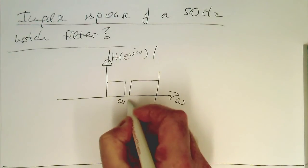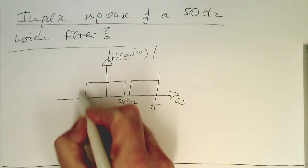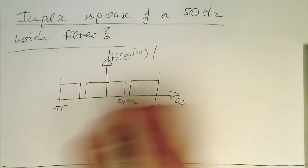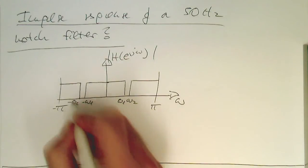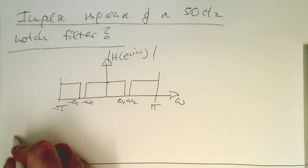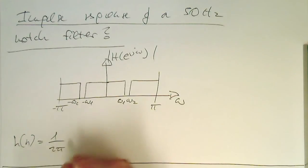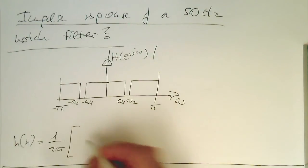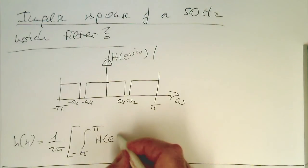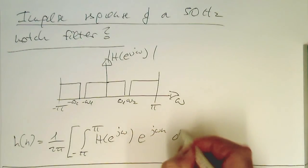Let's call the cutoff frequencies omega_1 and omega_2. To make this real, we also need a mirror going up to minus pi, giving us minus omega_1 and minus omega_2 on the negative side. What we need to do is calculate the inverse Fourier transform of this: 1 over 2 pi, integrated from minus pi to plus pi of H(e^{j omega}) times e^{j omega n} d omega.